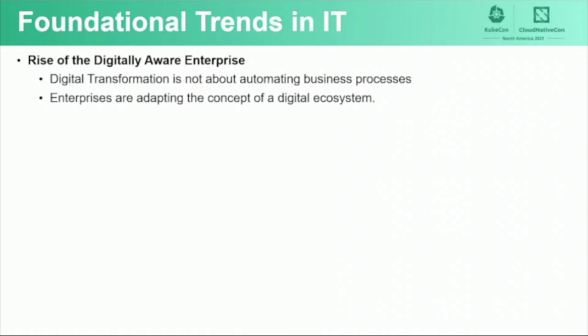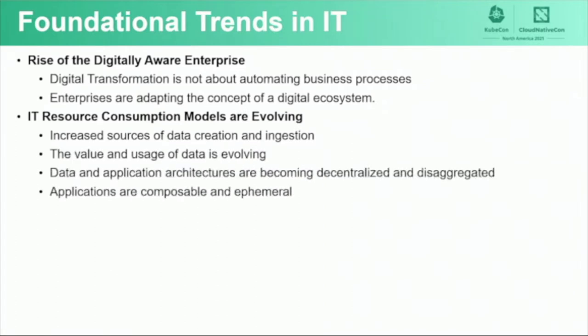Enterprises are designing individual business initiatives within the digital ecosystem to be organized into a collection of processes, technologies, and data interacting within a virtual infrastructure. The expectation is that this virtual infrastructure is optimized for the business outcome and fully abstracted from the physical infrastructure. As enterprises innovate on the business side, we see data and application architectures are shifting towards a more disaggregated model, offering greater agility and supporting elasticity. This is substantially changing the way IT resources are consumed, as the number of sources where data is created and ingested is increasing — for example, the proliferation of IoT with its unique data models and contextual significance.